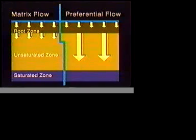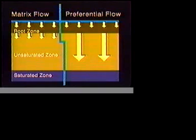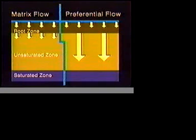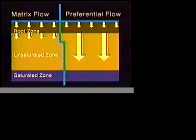Simple predictive models used to predict the fate of water and chemicals that infiltrate the ground assume that water infiltrates as a uniform front moving slowly down through the soil. This is called matrix flow. But this is not the way it always happens.